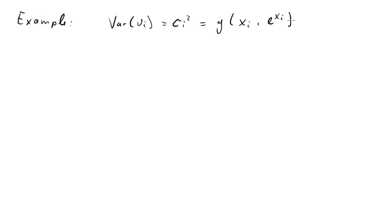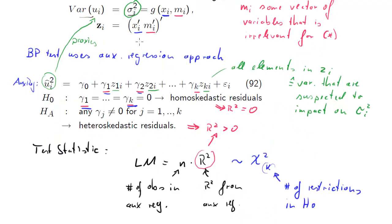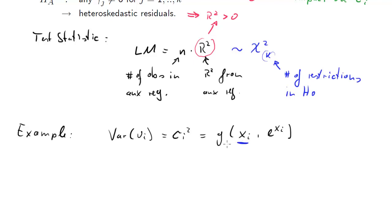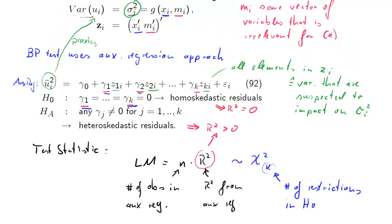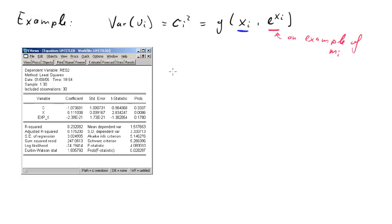Let's use an example for the Breusch-Pagan test. We have our regression model with y as the dependent variable and in our case a scalar explanatory variable xi. What we hypothesize for this example is that the variance is also a function of e to the xi. Now, e to the xi here is an example of this M variable — it doesn't appear as a variable in our conditional regression model, but we think it may be relevant to explain variation in the variance.